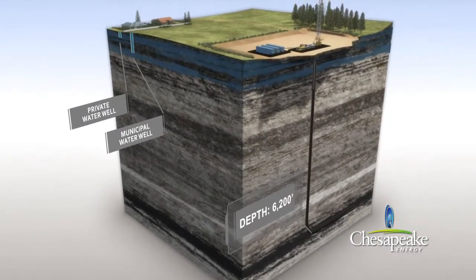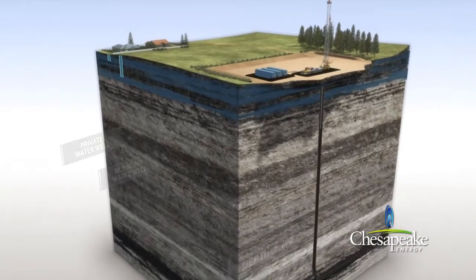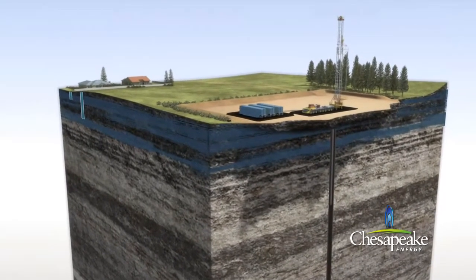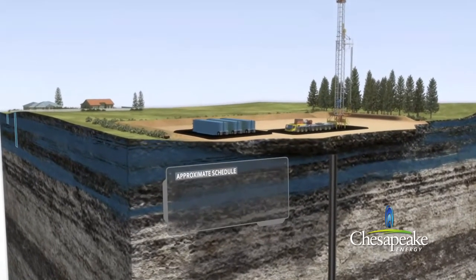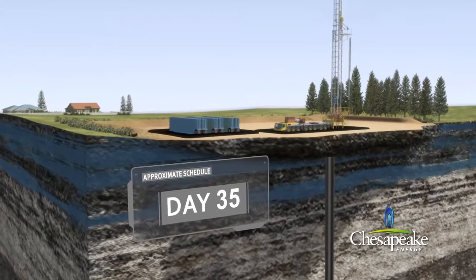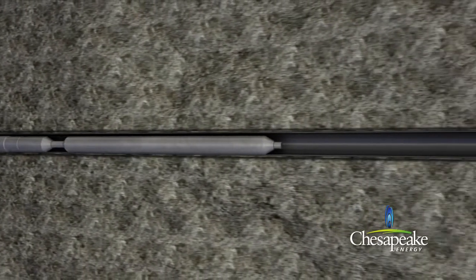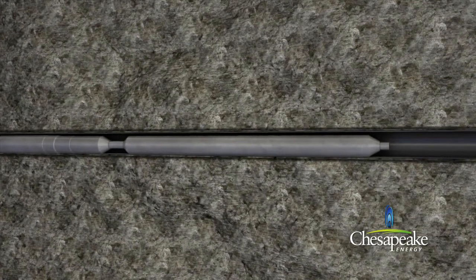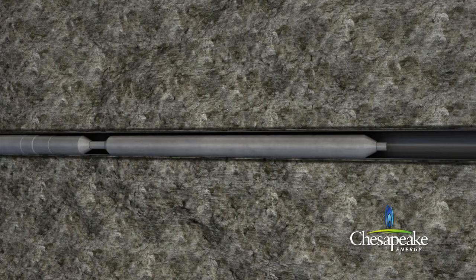In order to maximize the production potential of the well, the shale formation will be hydraulically fractured. In preparation for the fracturing process, the casing will be perforated in the horizontal portion of the well using tubing conveyed perforating guns containing explosive charges. The perforated intervals are spaced approximately 50 to 80 feet apart and create a connection between the production casing and the shale formation.